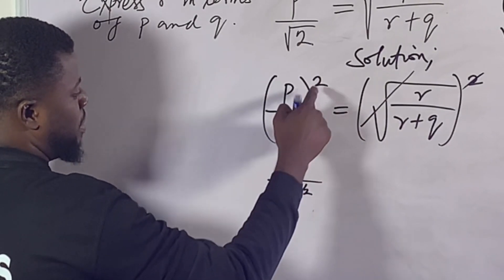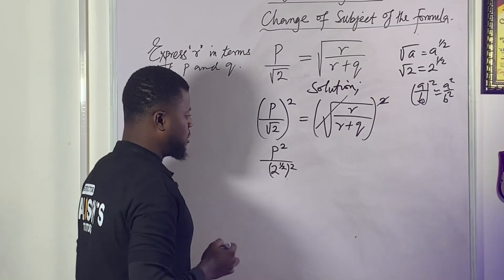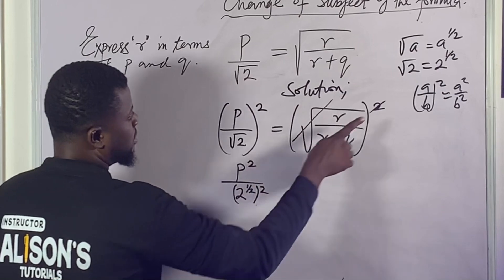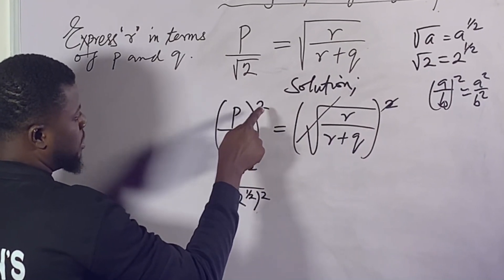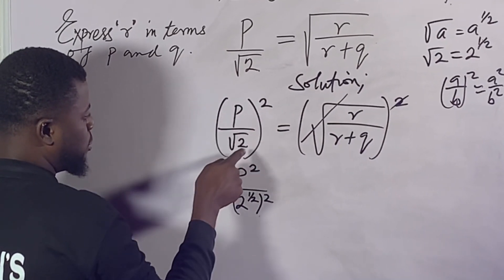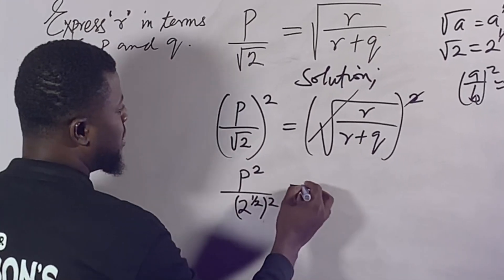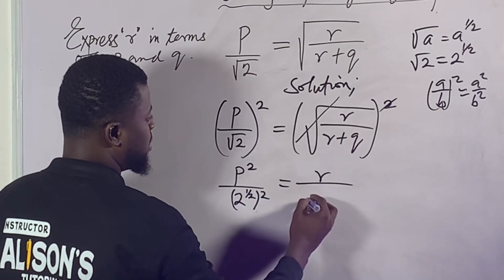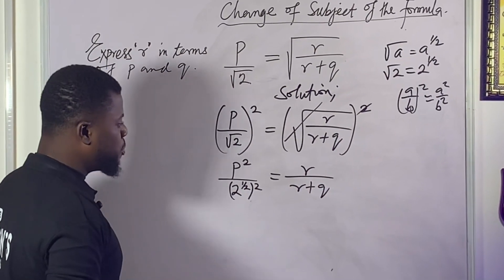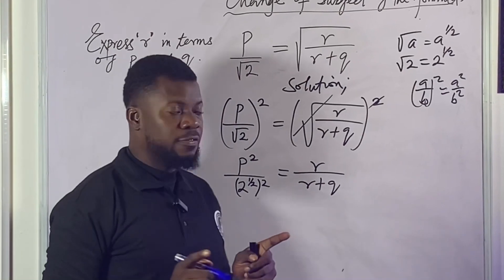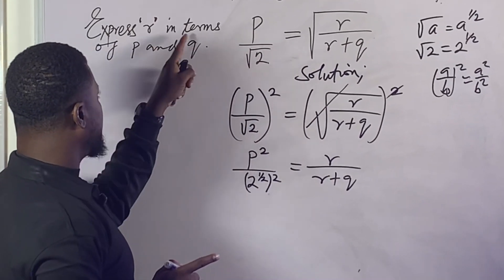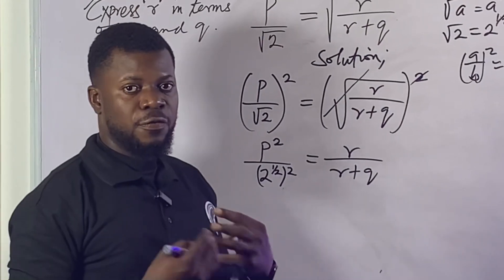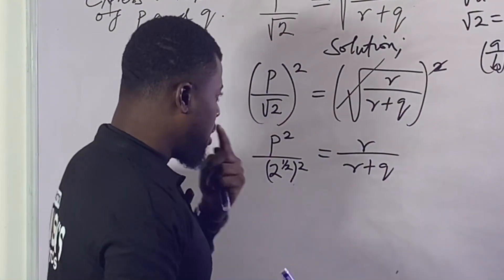That one-half will multiply accordingly. Because of that square, it distributes to both the numerator and denominator. What we'll have on the right-hand side of the equation will be arrow plus q. Keep in mind what we are looking for is arrow — we want to express arrow in terms of p and q, which is the same as making arrow the subject of the formula.